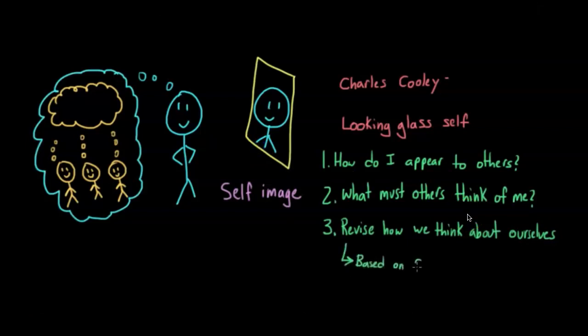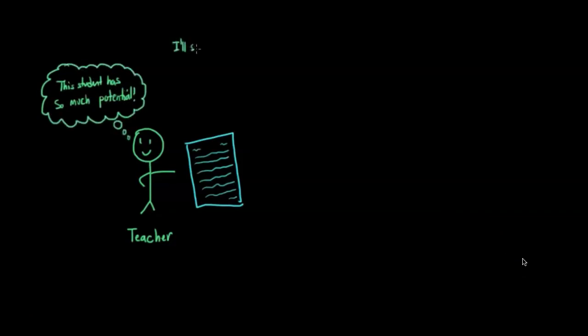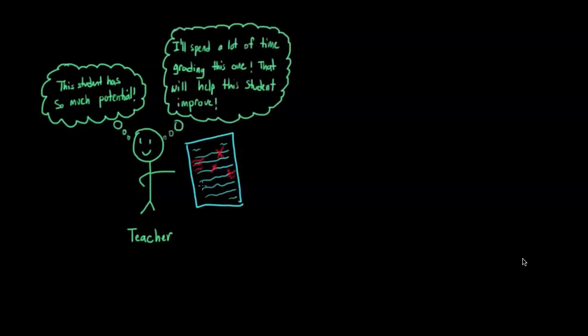According to this theory, we might develop our self-identities based on both correct and incorrect perceptions of how others see us. For example, a teacher grading a paper very harshly might be doing so because they think the student has a lot of potential and want to help them reach it. But when the student gets their paper back full of red ink marks and corrections, how might that student interpret this, and how might it influence their self-image?